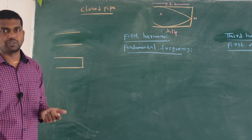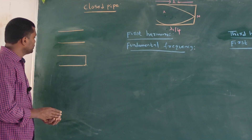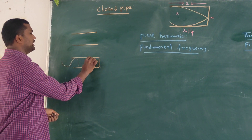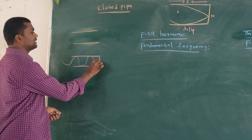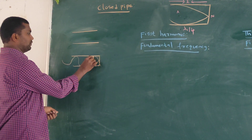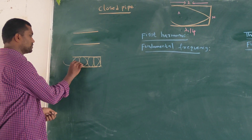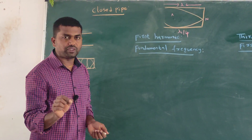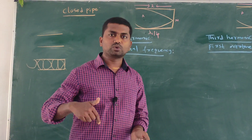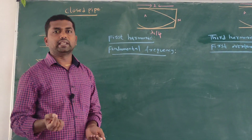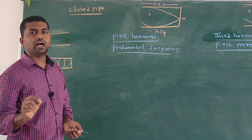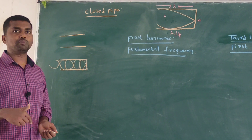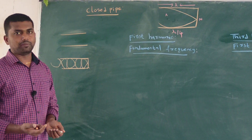We have to observe the formation of stationary loops and the frequencies of stationary loops in a closed pipe. If we send a sound ray into a closed pipe, it is incident on the other end and then reflected and superposed. The incident and reflected waves have the same frequency and same amplitude, and when superposed, stationary waves are formed in the closed pipe.